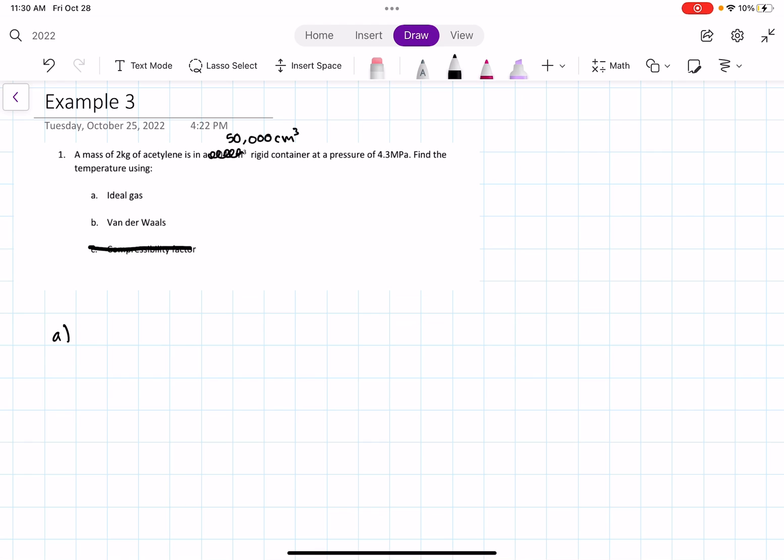Our ideal gas equation of state is PV equals nRT. Let's go ahead and write down all the information that is given to us in the problem statement. So we have our mass given to us,